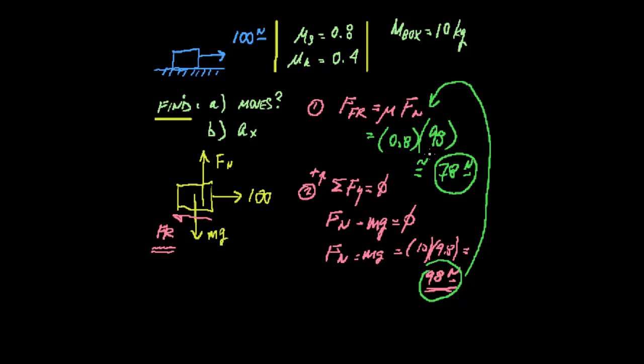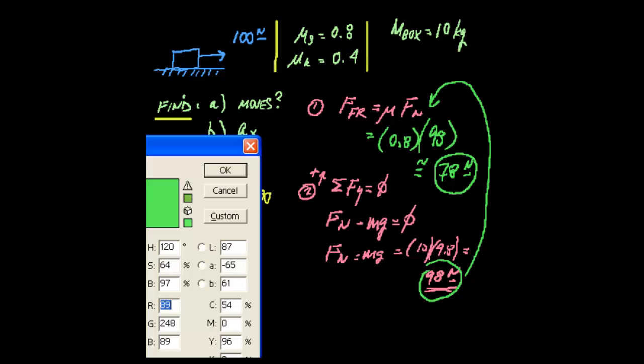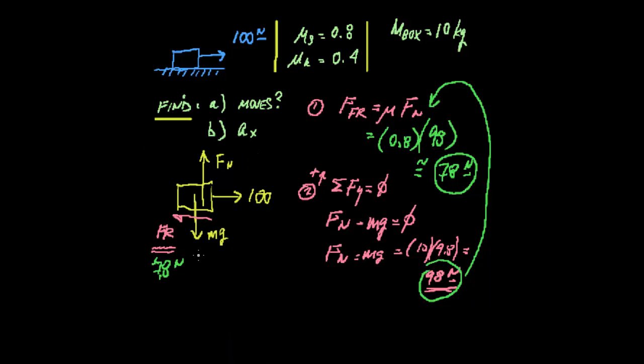I know my students would be yelling out the answer, but that's how much is pulling back. So if we come back here, we say we have 78 newtons now pulling to the left. Now, 100 this way, 78 that way, definitely means that the 100 is going to win. So it is going to move.